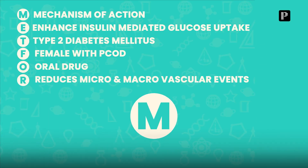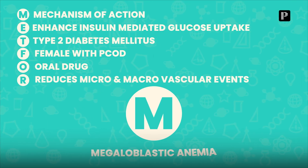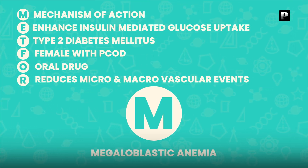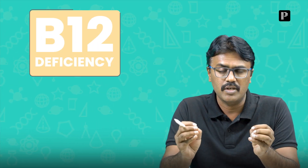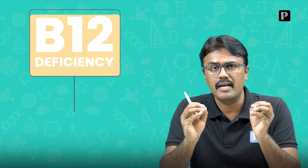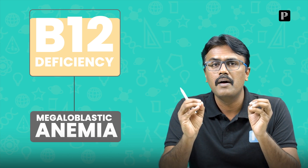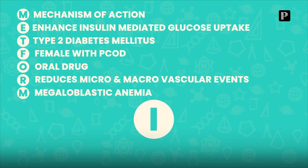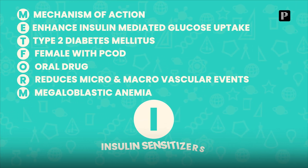Metformin also decreases macrovascular events like MI and stroke. Then the next letter M — the drug can cause megaloblastic anemia. Why? Because it can decrease B12, leading to B12 deficiency and subsequently to megaloblastic anemia.